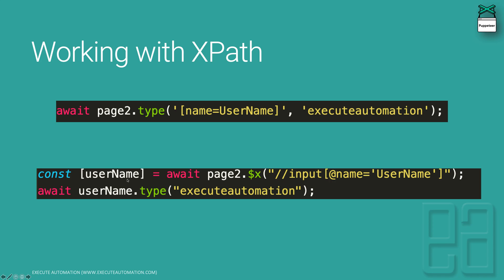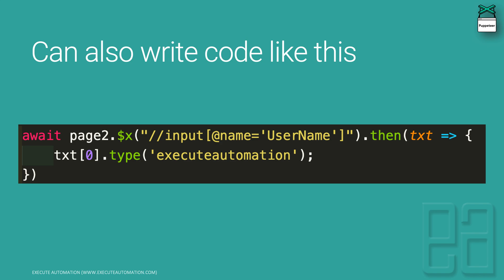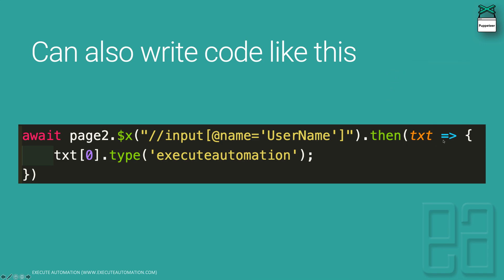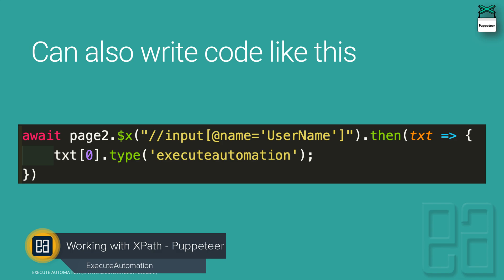We can also write the same code in a different fashion, resolving the promise with an arrow function and then performing a type operation. But as you can see, this particular code actually has a mistake — and this is one of the most common errors I have seen. Students are asking me why this code is not working the way they've written it.